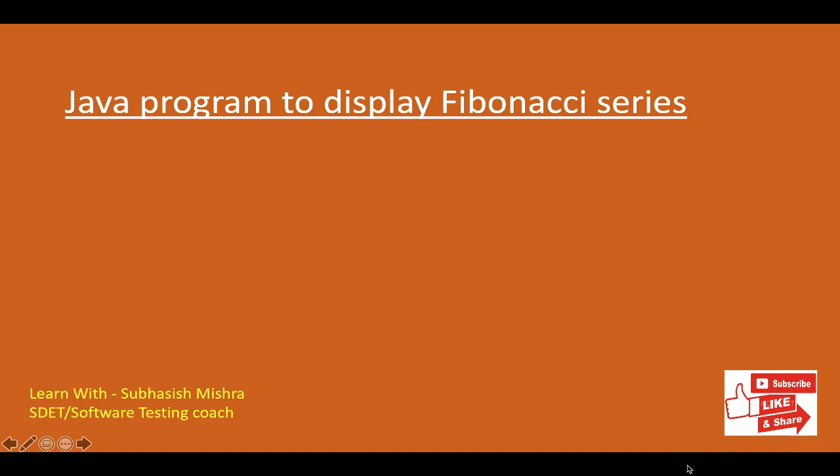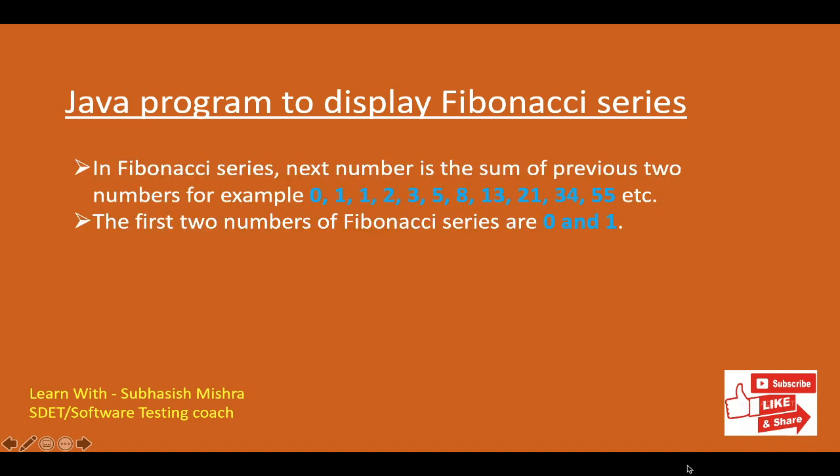First we need to understand what is Fibonacci series. In Fibonacci series, the next number is the sum of the previous two numbers. For example, 0, 1, 1, 2, 3, 5, 8, 13 — all these are a Fibonacci series.